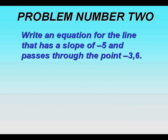So let's look at problem number 2. Let's write an equation for the line that has a slope of negative 5 and passes through the point negative 3 comma 6.